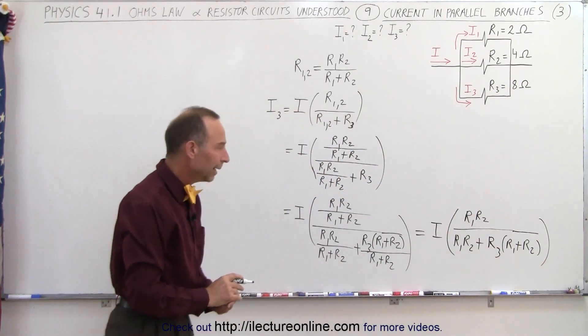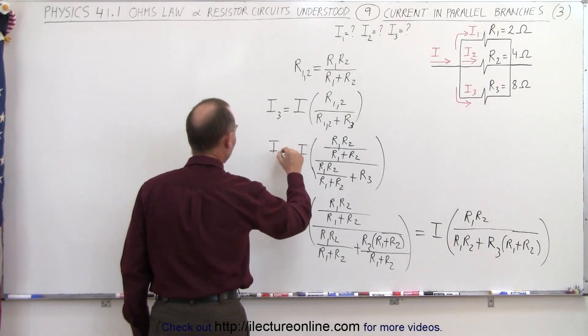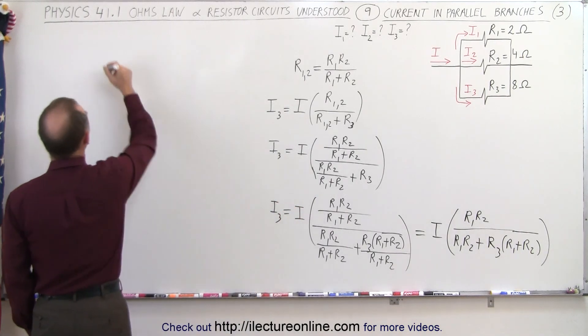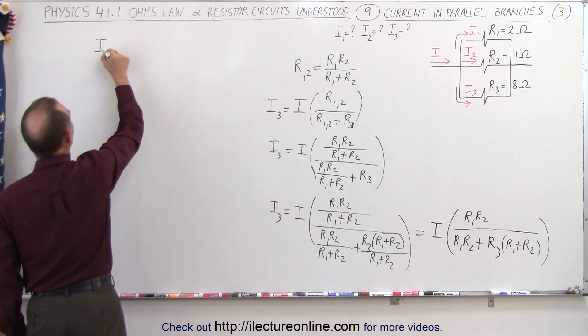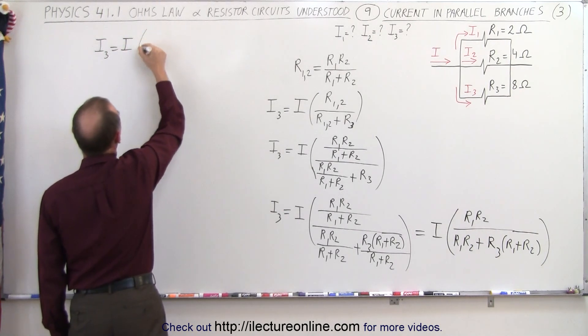If we multiply out the denominator, we get the final form. So I3 is equal to the current entering the branch point of the three branches times, in the numerator, we get R1 times R2.